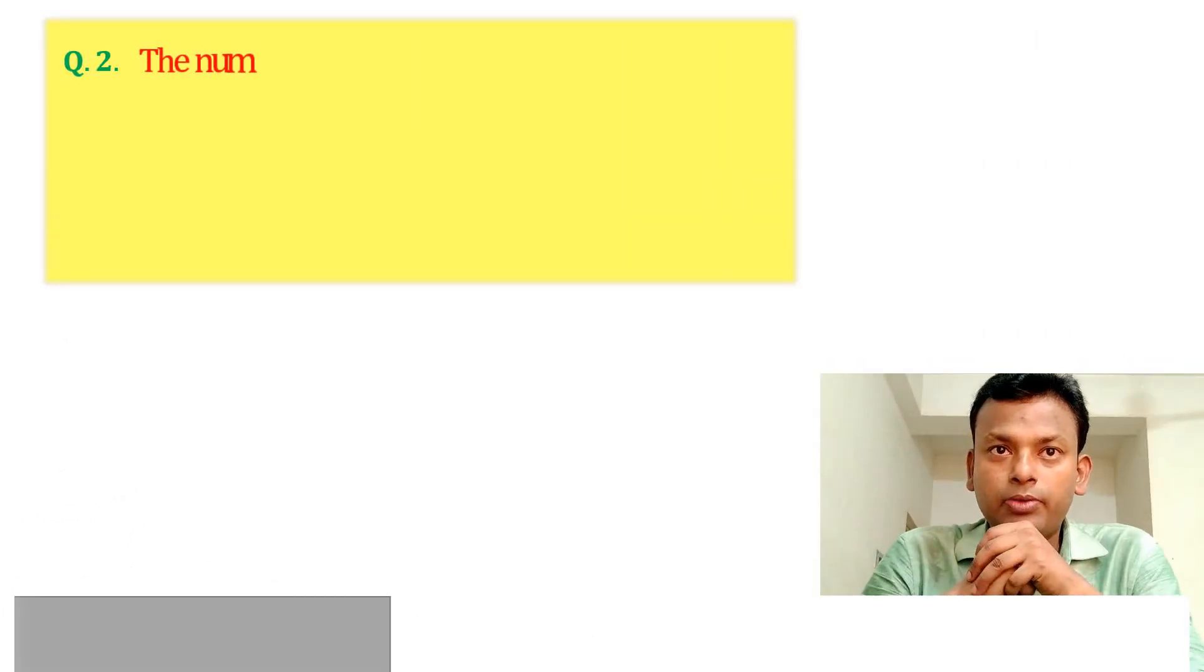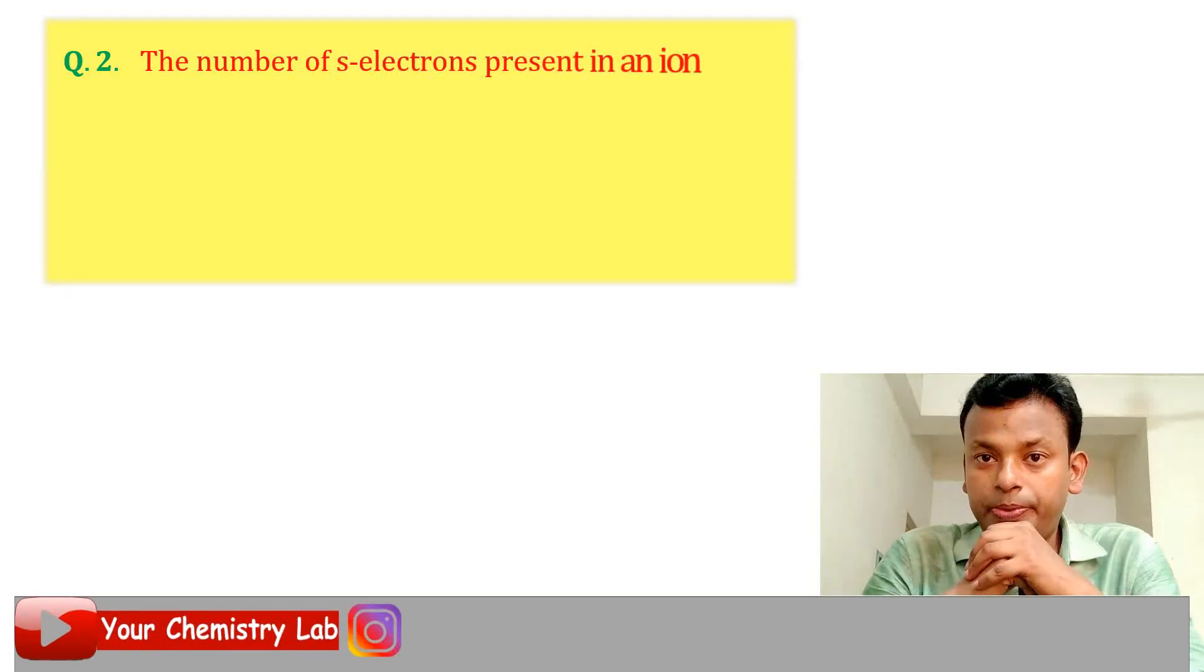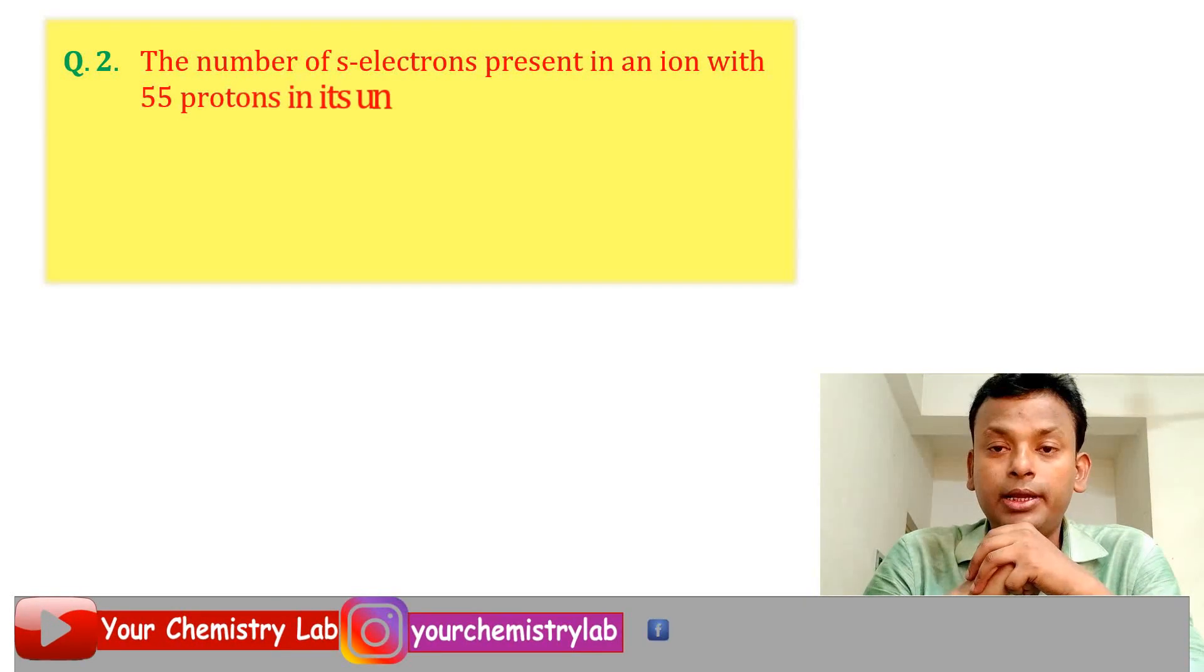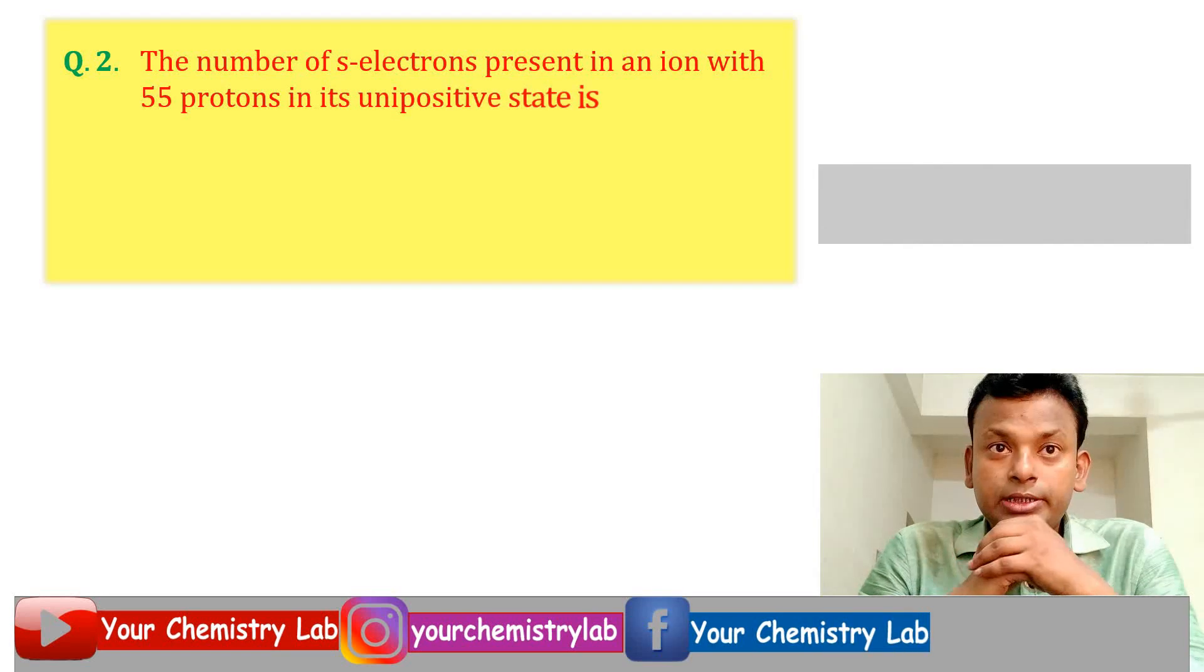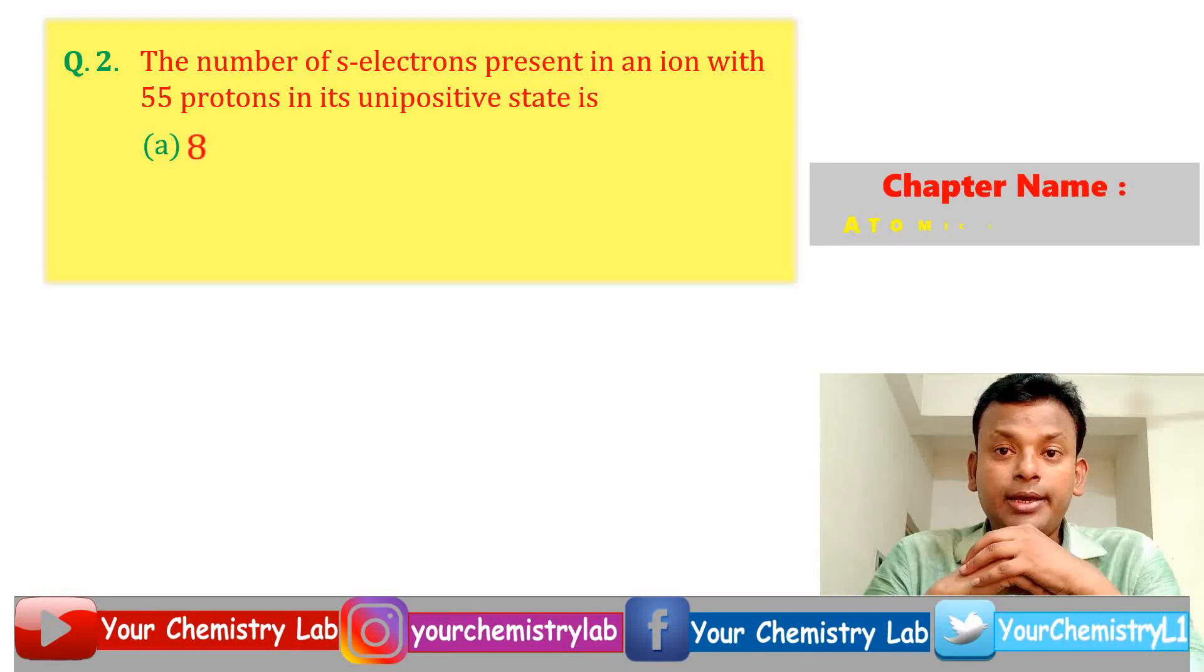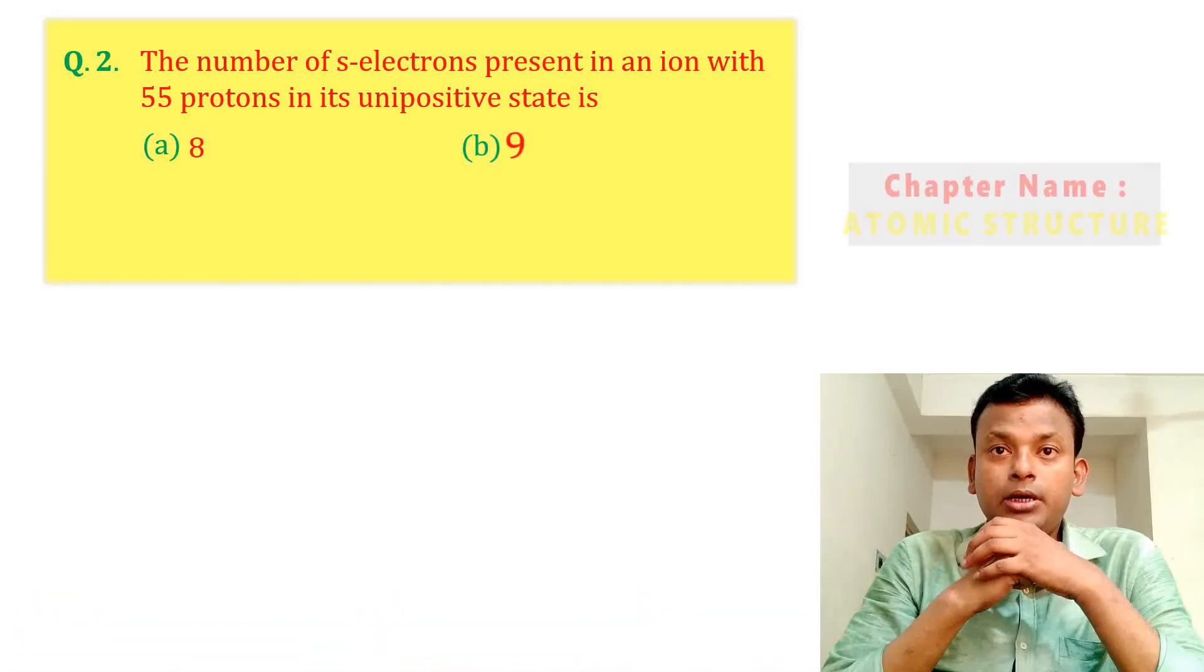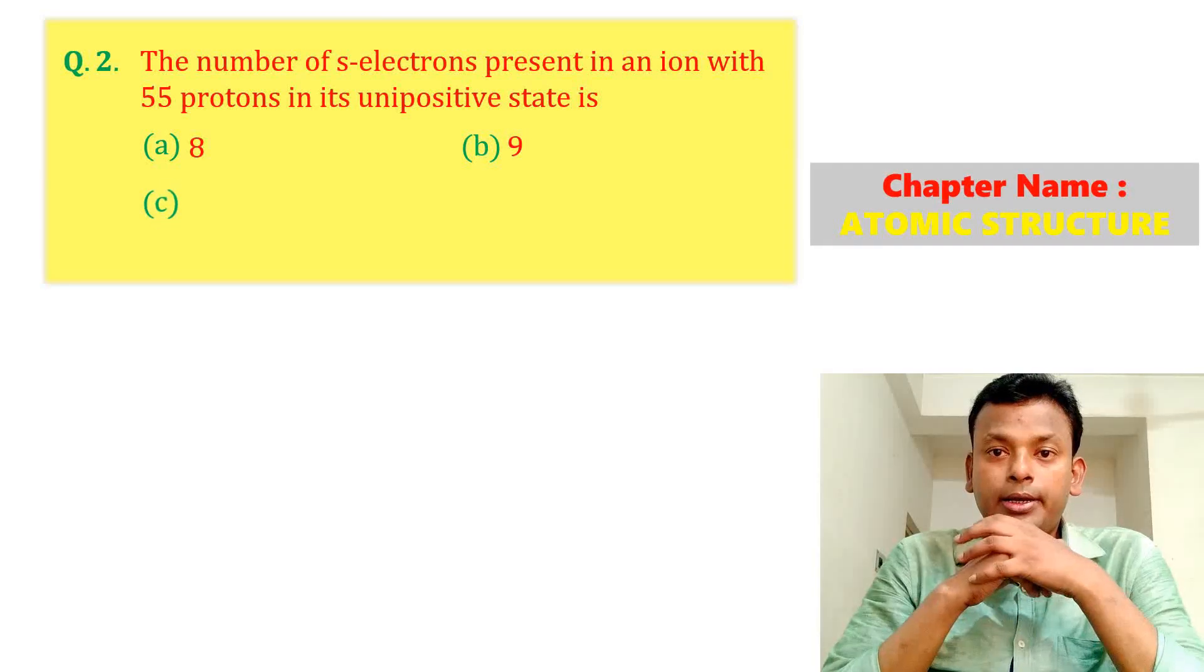Question two: The number of s electrons present in an ion with 55 protons in its unipositive state is - option A, option B, option C, and option D.